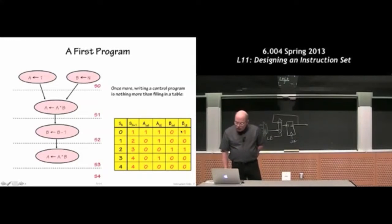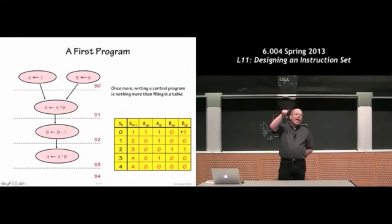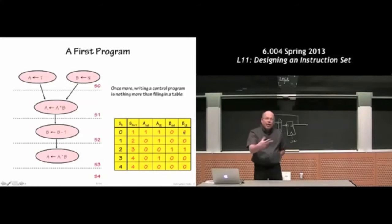And similarly, when the load enable on B is one, we're selecting the value N to be routed to the input of the B register. And then when B select is zero, we're selecting the value N to be routed to the B register. And then when the load enable signal for B is one, we're going to actually load that register.